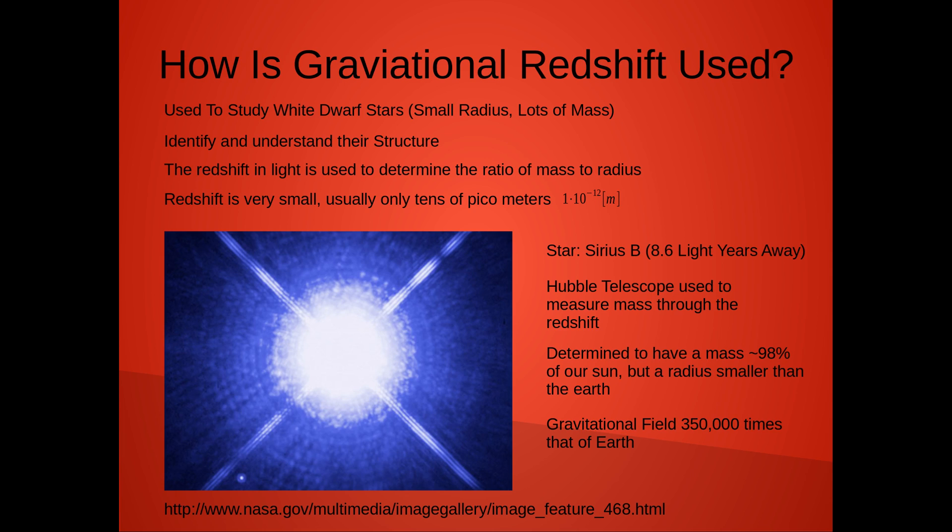However, one big case that gravitational redshifting was used was on measuring the mass of star Sirius B, where the Hubble Telescope measured the redshift and determined that Sirius B has about 98% the mass of our sun, but a radius smaller than Earth. Thus, Sirius B has actually a gravitational field 350,000 times that of Earth.